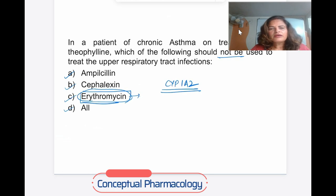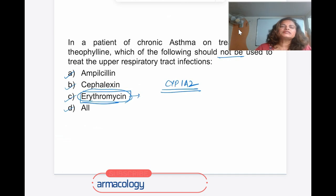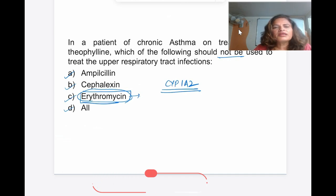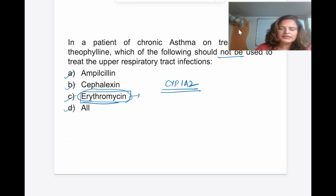Q4: Theophylline overdose causes toxicity mainly related to GIT, CNS (seizures), and CVS. Q5: In a patient with chronic asthma on theophylline, which drug should NOT be used for upper respiratory tract infection? — Erythromycin, because it is a CYP1A2 enzyme inhibitor and will increase theophylline plasma levels. I will provide a link to the first video and to a receptor down-regulation video in the description box. In the next video I will cover the remaining drugs for bronchial asthma treatment.